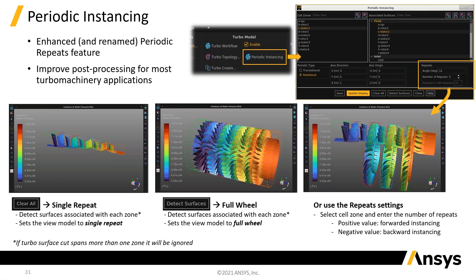Along with the turbo workflow, there has been a big improvement in setting up periodic instancing. If you're building a machine, you might want a couple of blades in one row, a full row elsewhere, and five blades in another — you can very quickly set all of that up efficiently. And it makes post-processing easy because you can tell it that you want to post-process the whole device, and it will copy the results accordingly.